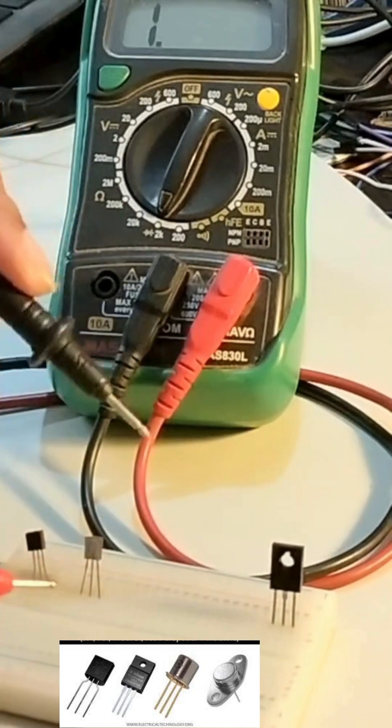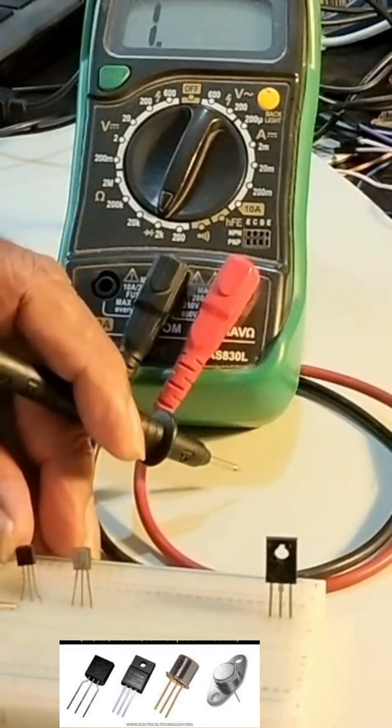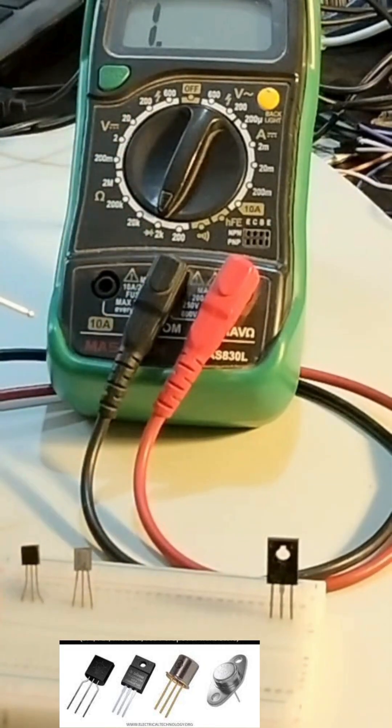One side we got some value here and other side we didn't get the value. That means the transistor is good. The transistor is good. Number one. Number two.